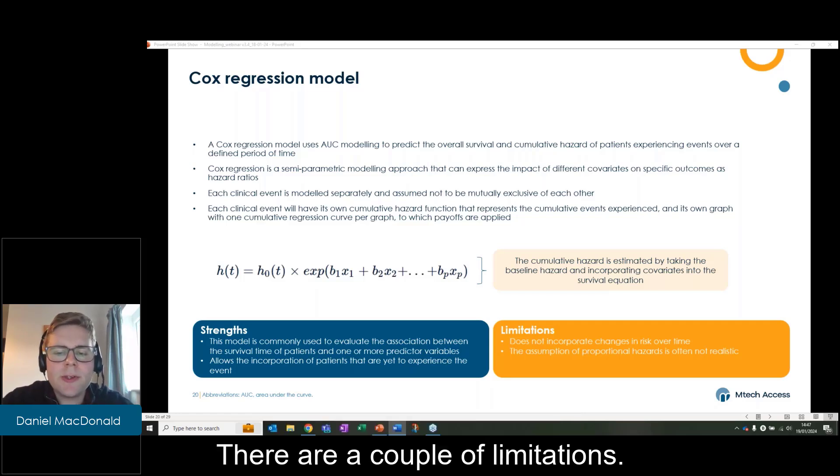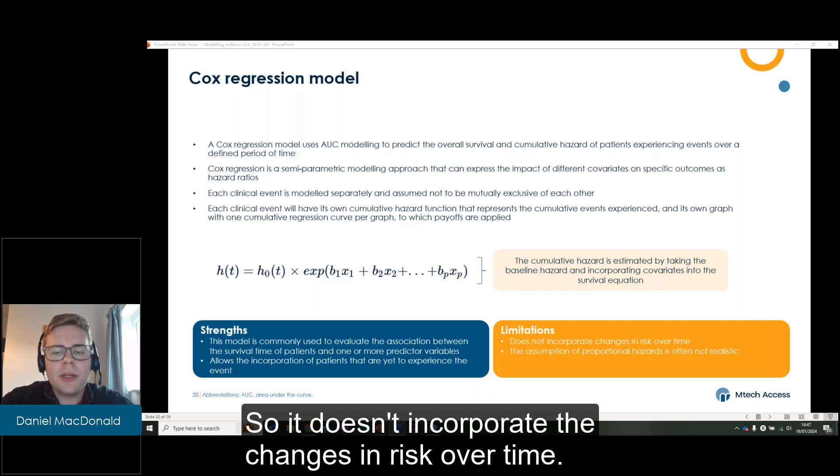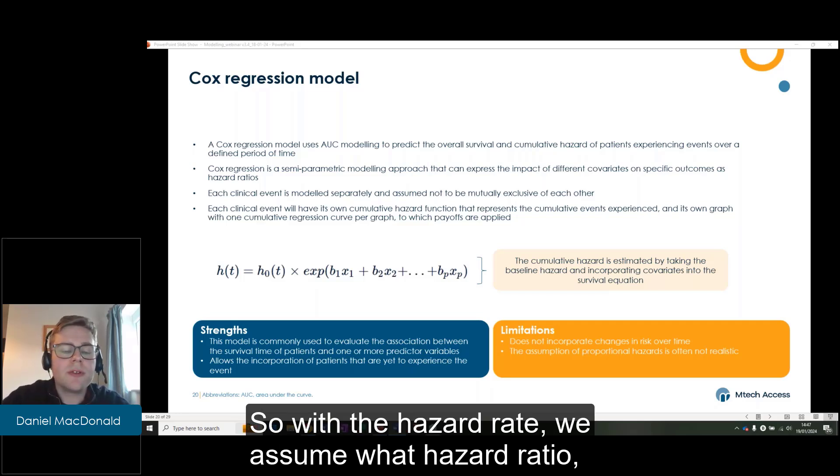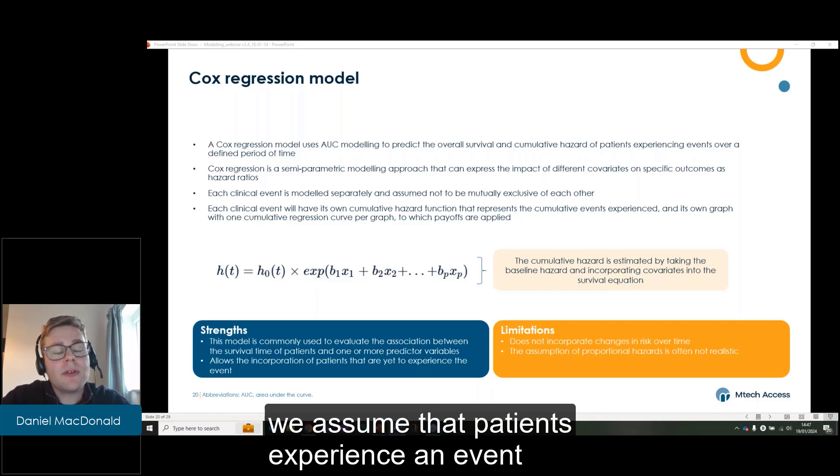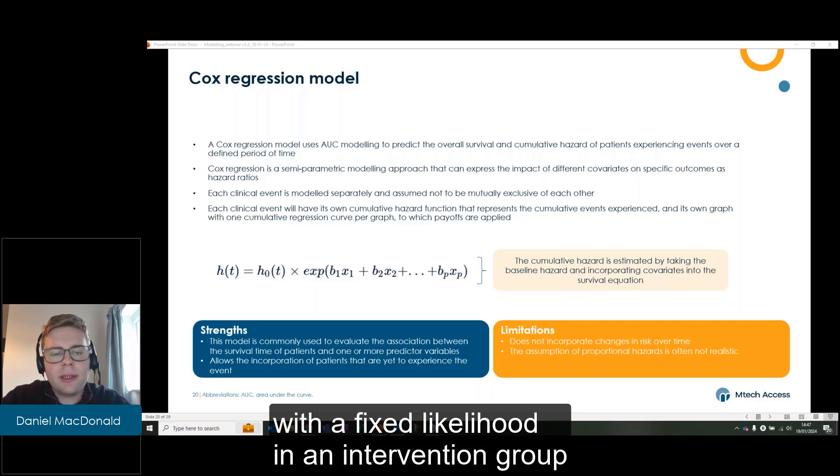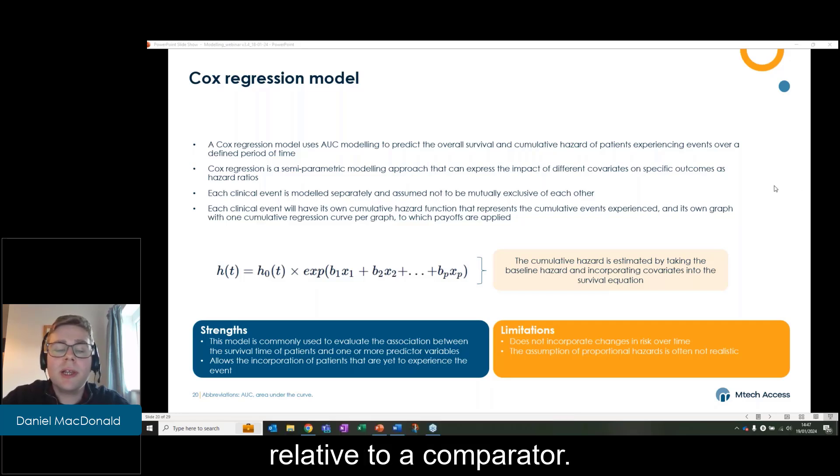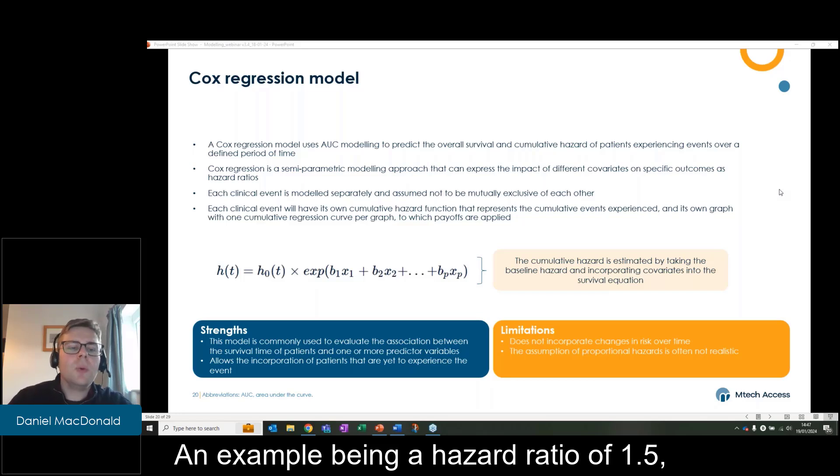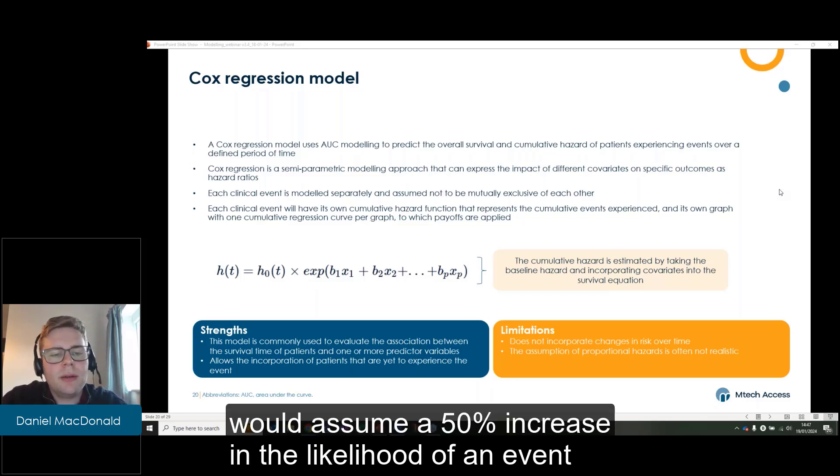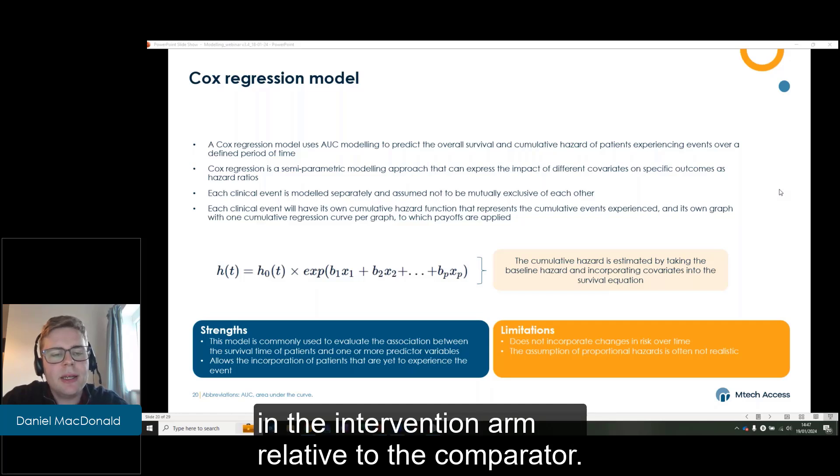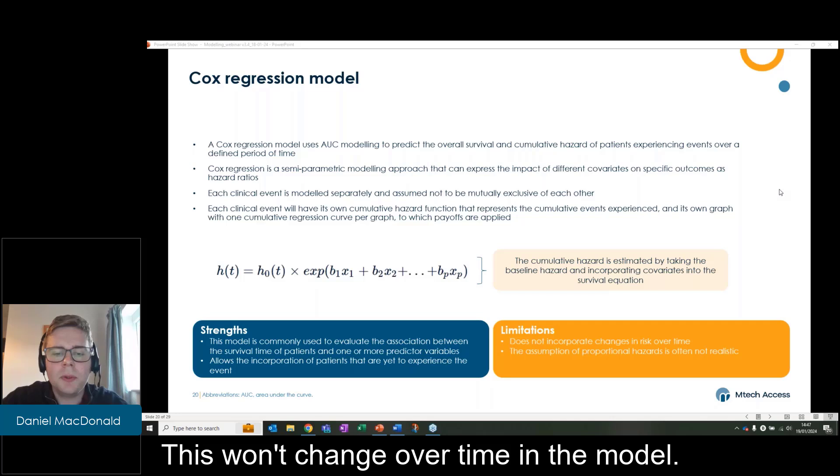There are a couple of limitations, so it doesn't incorporate the changes in risk over time. With a hazard rate or the hazard ratio, we assume that patients experience an event with a fixed likelihood in an intervention group relative to a comparator. An example being a hazard ratio of 1.5 would assume a 50% increase in the likelihood of an event in the intervention arm relative to the comparator. This won't change over time in the model.